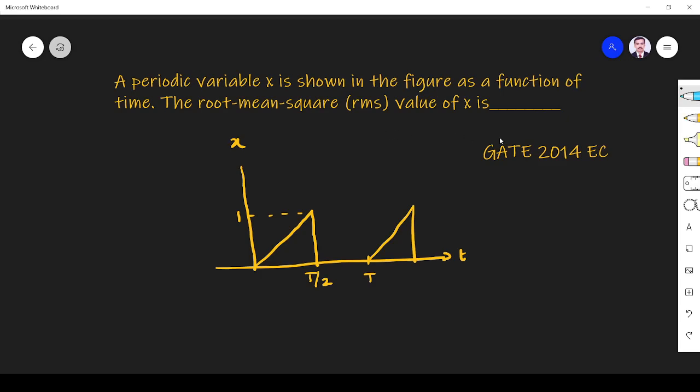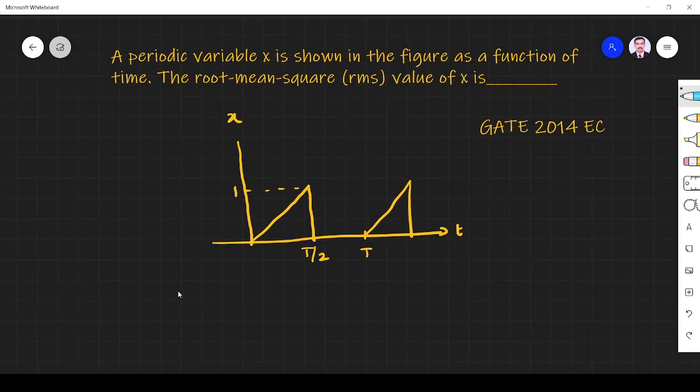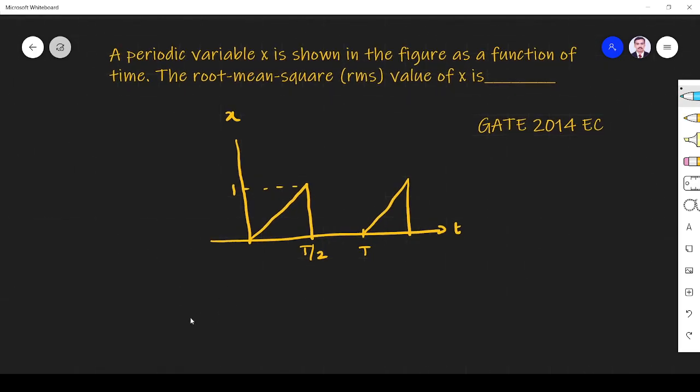The root mean square value of x. So they ask RMS value. We know RMS value of the given function - RMS value is root mean square value.